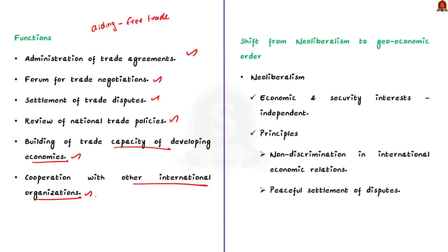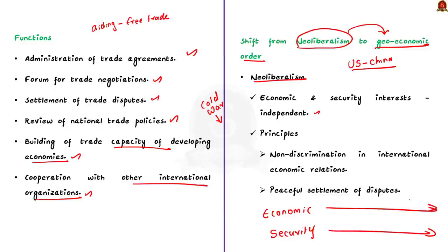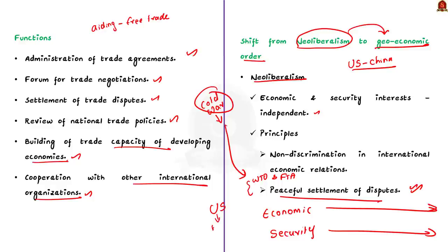The editorial says the world is shifting from neoliberalism to a geoeconomic order, particularly seen in the case of USA and China. After the Cold War, the world was interested in neoliberalism — where economic and security interests are independent tracks. Neoliberalism is based on principles such as non-discrimination in international economic relations (free trade) and peaceful settlement of disputes through neutral international courts. These principles were achieved through global institutions such as WTO and free trade and investment treaties. This was the case immediately after the Cold War, when the US existed as an undisputed hegemon and supported free trade because it did not fear the growth of strategic rivals such as China.